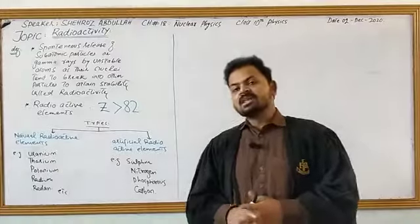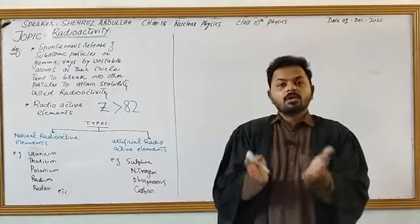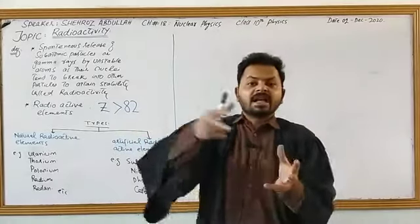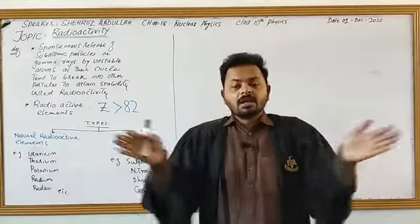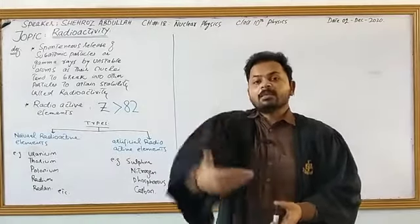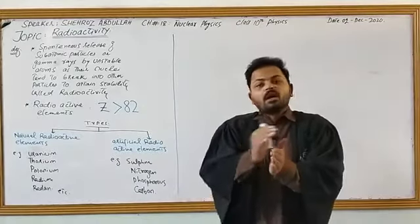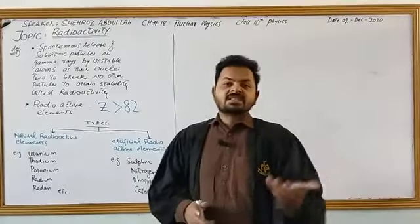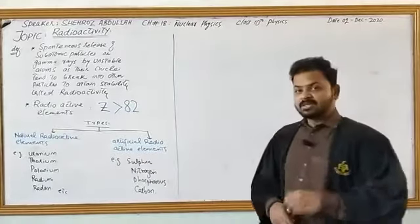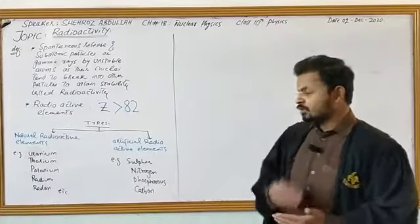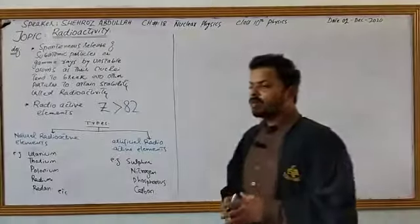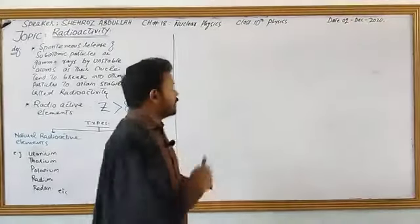Artificial radioactive elements are those that are not naturally radioactive, but we make them radioactive by making them unstable — by bombarding energy onto them, giving temperature, or providing some external source of energy. When they become unstable, they automatically release some energy to regain stability. Examples include sulfur, nitrogen, phosphorus, and carbon.